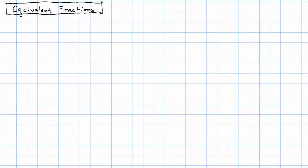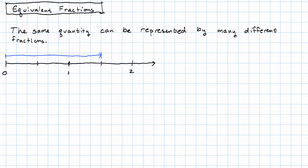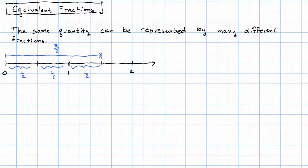One of the ways that fractions are different from whole numbers is that the same quantity can be represented by many different fractions. Here, let me draw you a picture of the fraction 3 halves. That's the fraction 3 halves. Why? Because each of these pieces is 1 half, and that length makes up 3 of them.